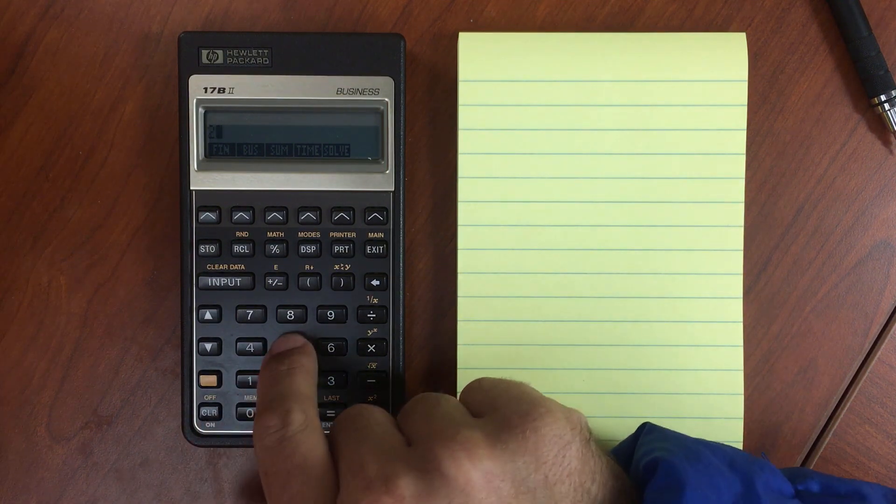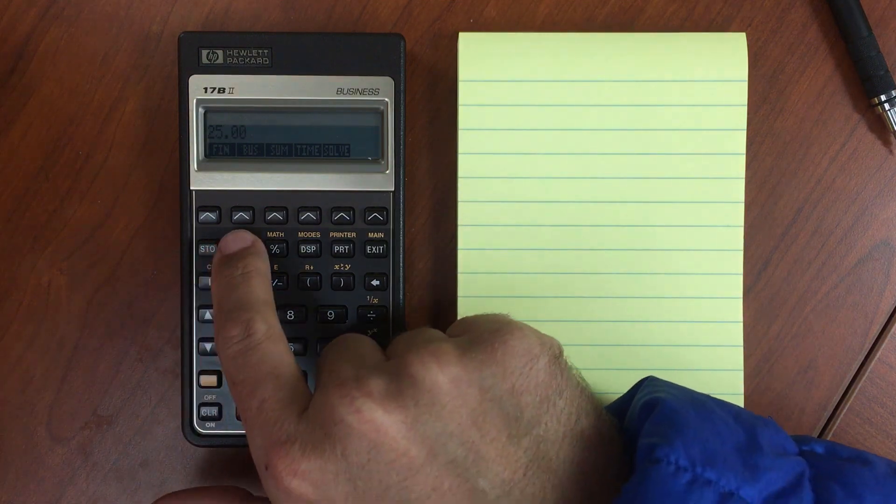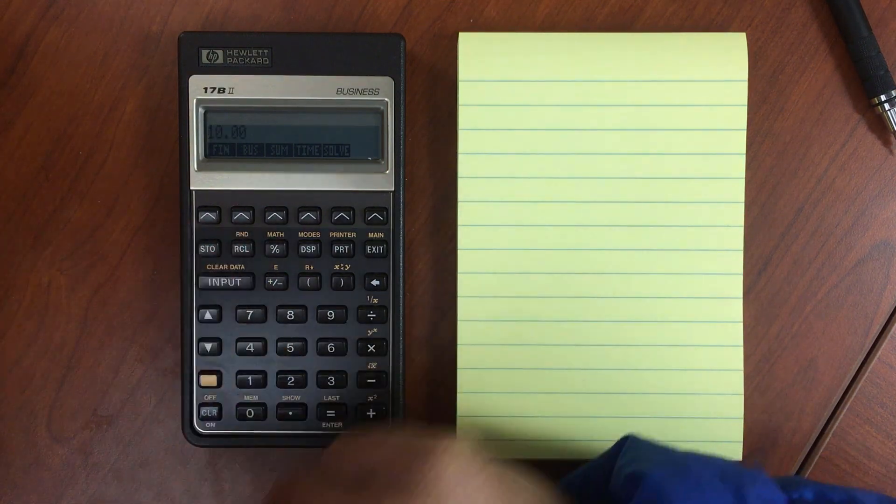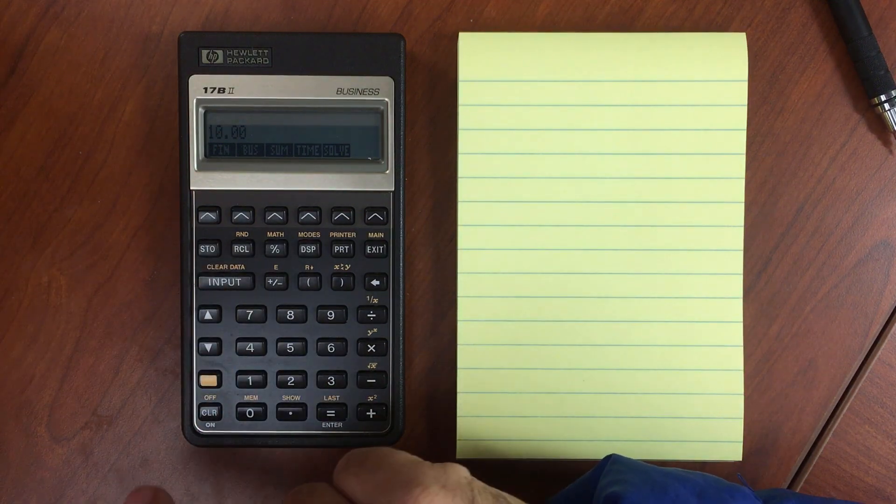Now, if I do another number, and then I recall register 1, I get my 10 back. So I've got 10 stored in register 1 right now.